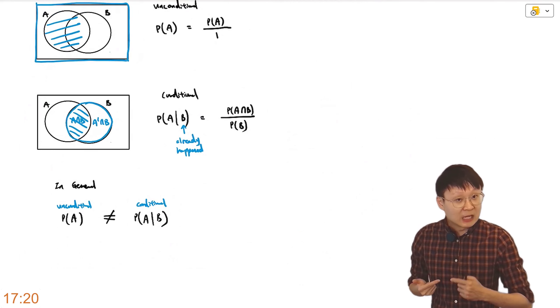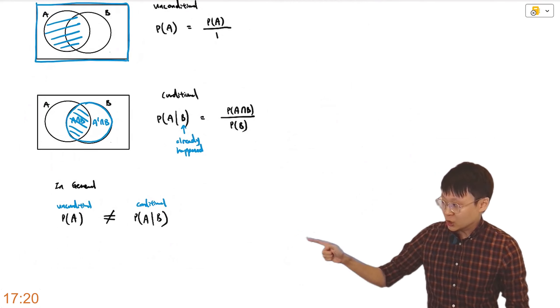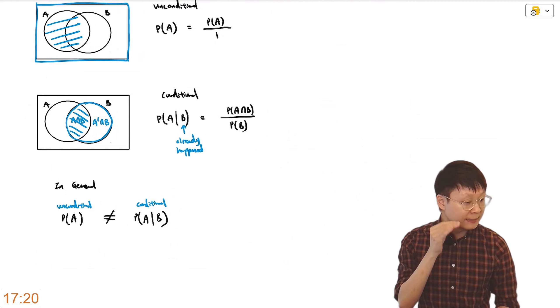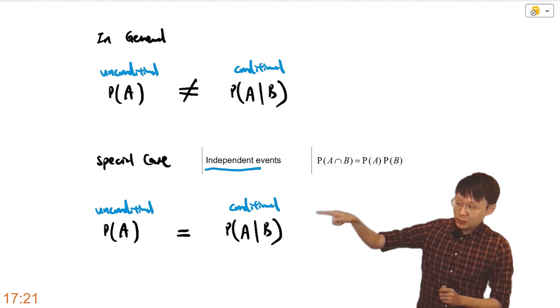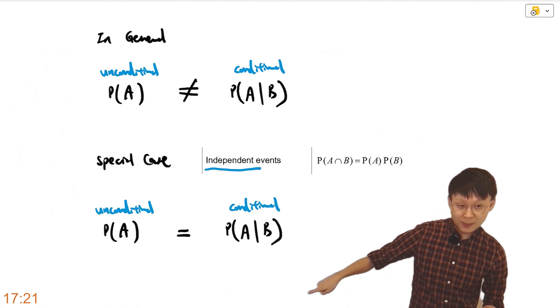However, that's precisely their point. In the special case, where conditional and unconditional are equal, that is where you have independence. Due to some coincidence, they are equal. In general, they are not equal, but let's talk about the special case where they are equal.